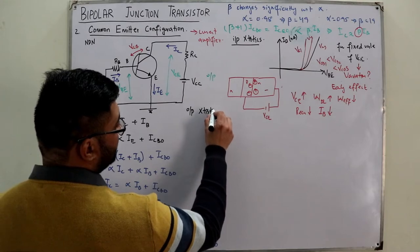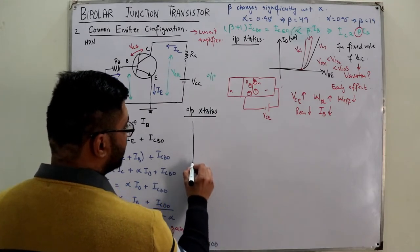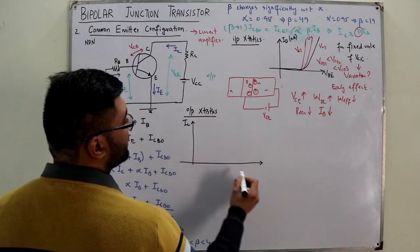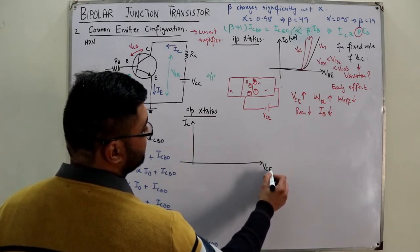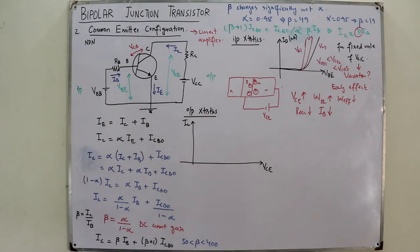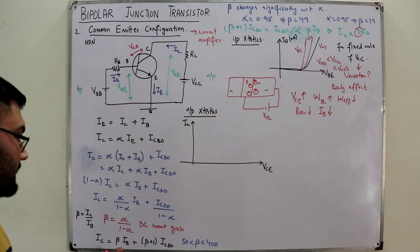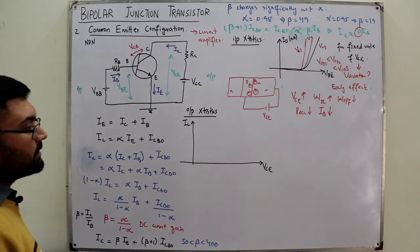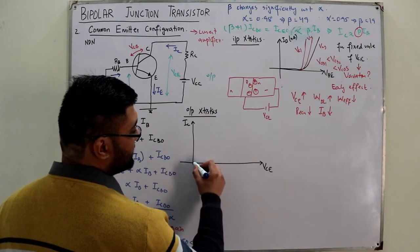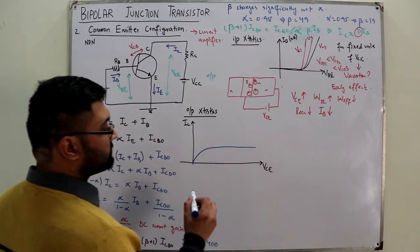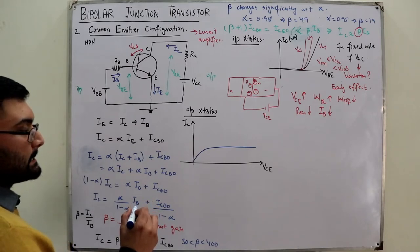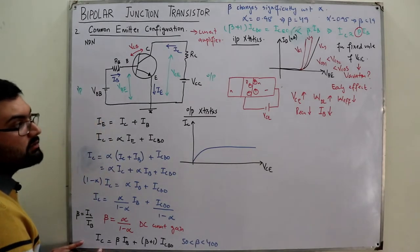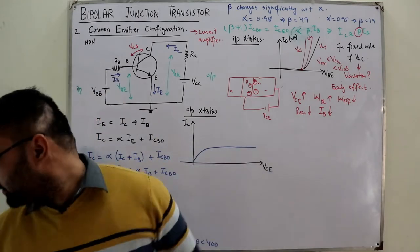For the output characteristics: output current IC versus output voltage VCE. From the equation IC = β·IB + ICEO, the output current is approximately independent of VCE. So you get an approximately flat, linear curve for each fixed value of IB. I will explain the different regions of this curve.